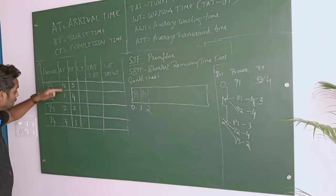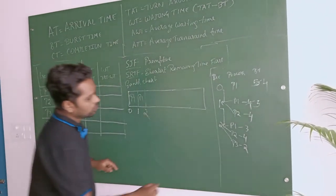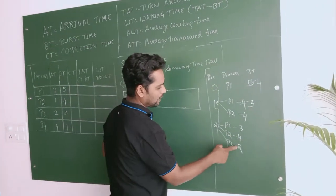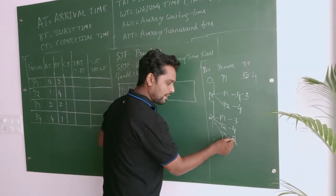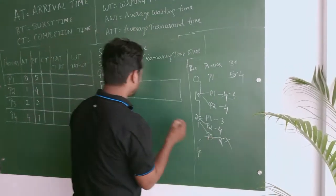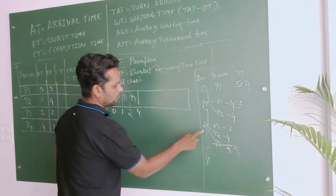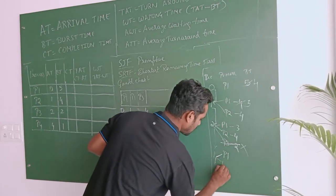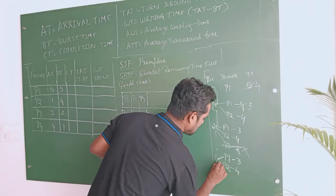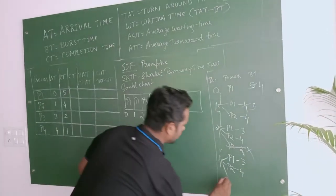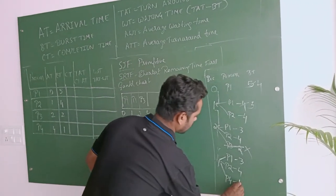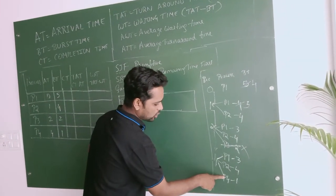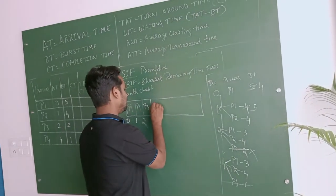Next arrival is at 4 seconds. To reach 4 seconds, check shortest time among P1, P2, P3. P3 is shortest with 2 seconds. P3 executes 2 seconds to make it 4 seconds — P3 is done at 4 seconds. At 4 seconds, P1 remaining 3, P2 remaining 4, and P4 arrives with burst time of 1 second. No more processes after this, so go non-preemptive.